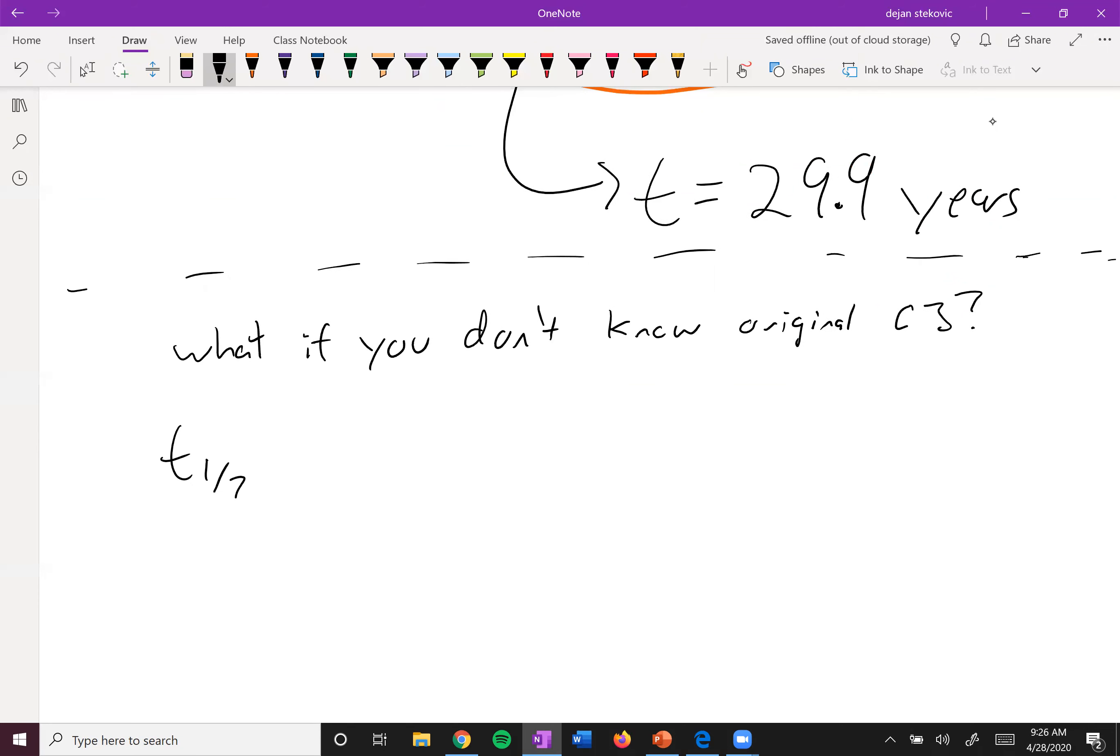You can still say t₁/₂ = 0.693/k, and we can experimentally measure any half-life. Then for the other side, instead of talking about concentrations, we can compare the rates, because they're proportional to one another. We can take the rate at time t over the original rate.